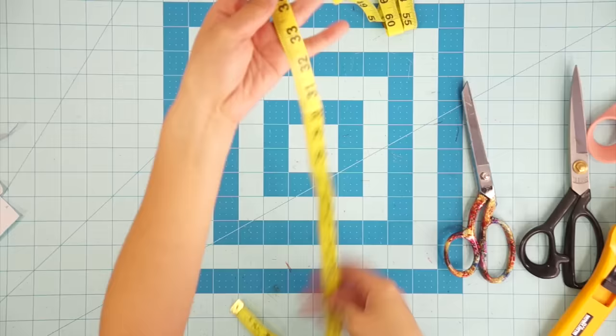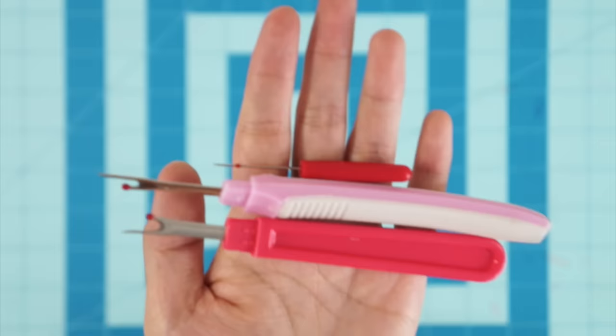Next I recommend you have a straight ruler and get a clear one so you can see underneath and a tape measure to measure the body.